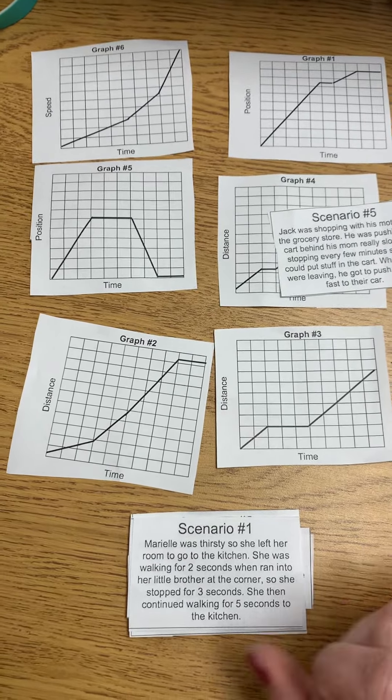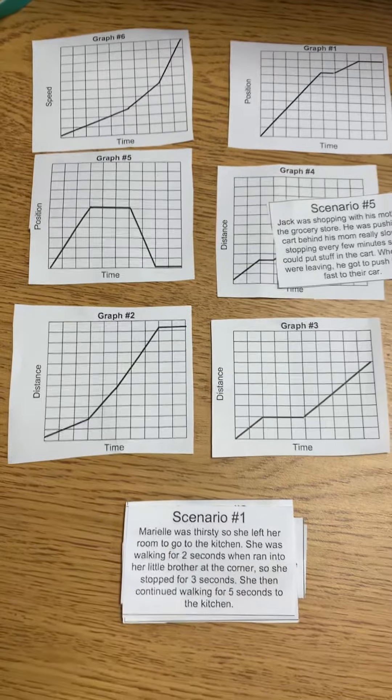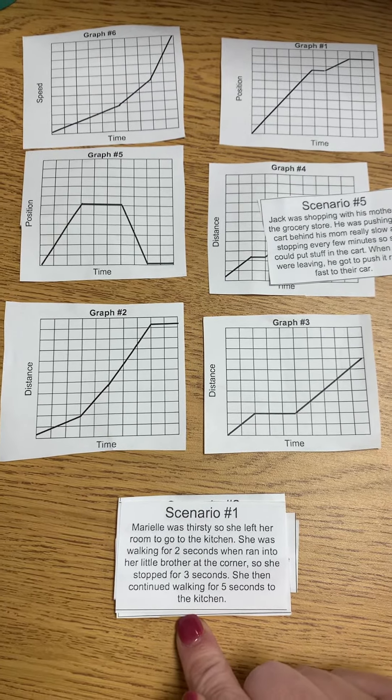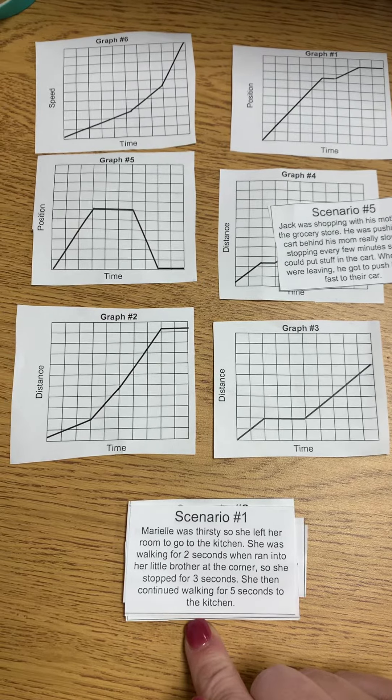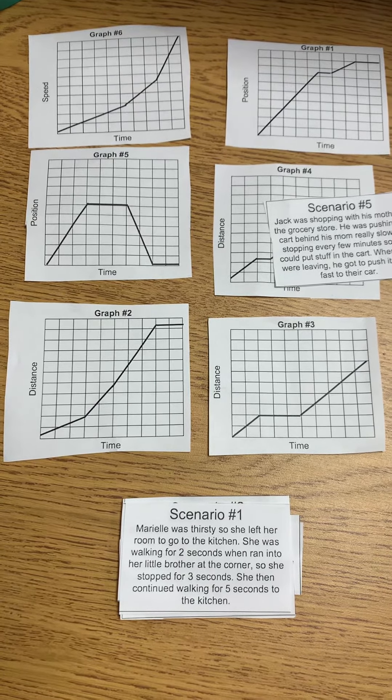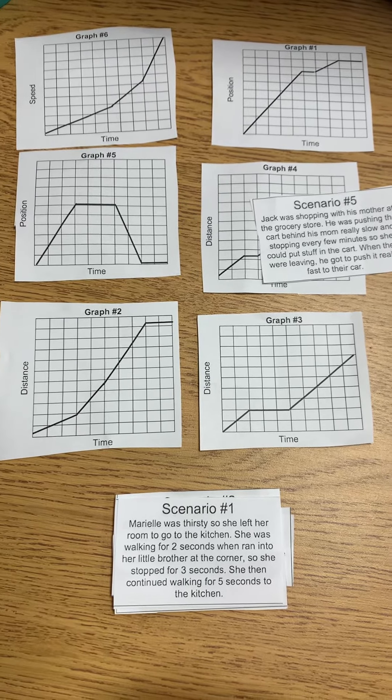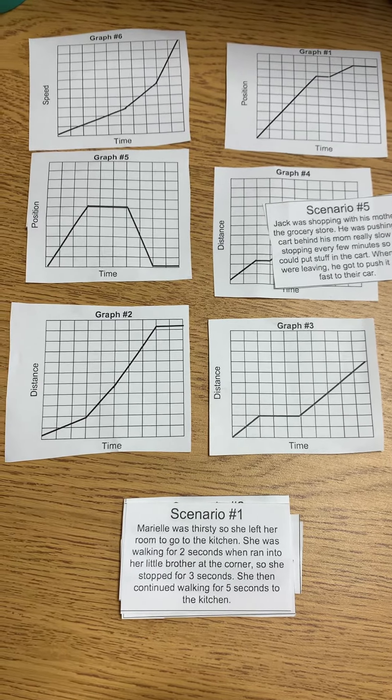Okay. We're going to do one more together and then the rest on you. All right. Scenario one. Mariel was thirsty, so she left her room to go to the kitchen. She was walking for two seconds when she ran into her little brother at the corner. So she stopped for three seconds. She then continued walking for five seconds to the kitchen.